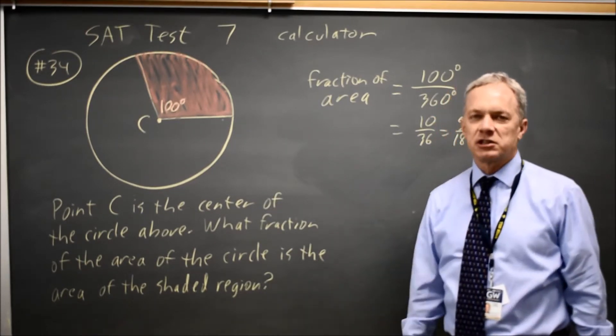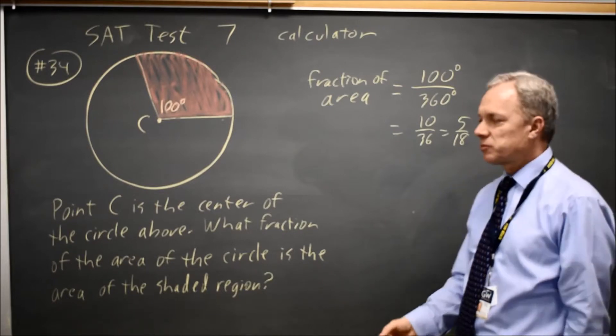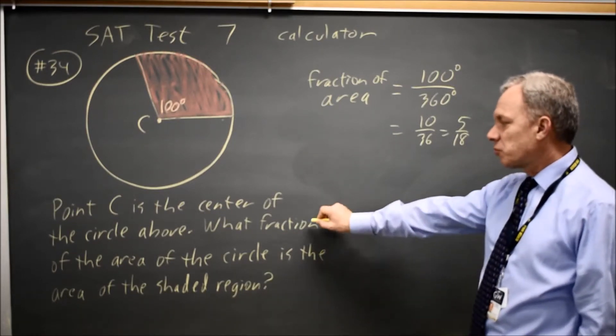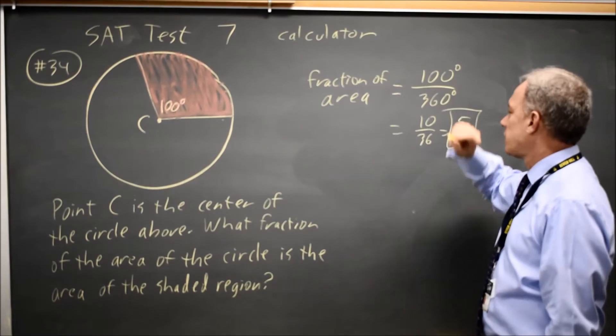You can use your calculator to get either a decimal or a fraction in simplest form. Their question was, what fraction of the area? That is 5 over 18.